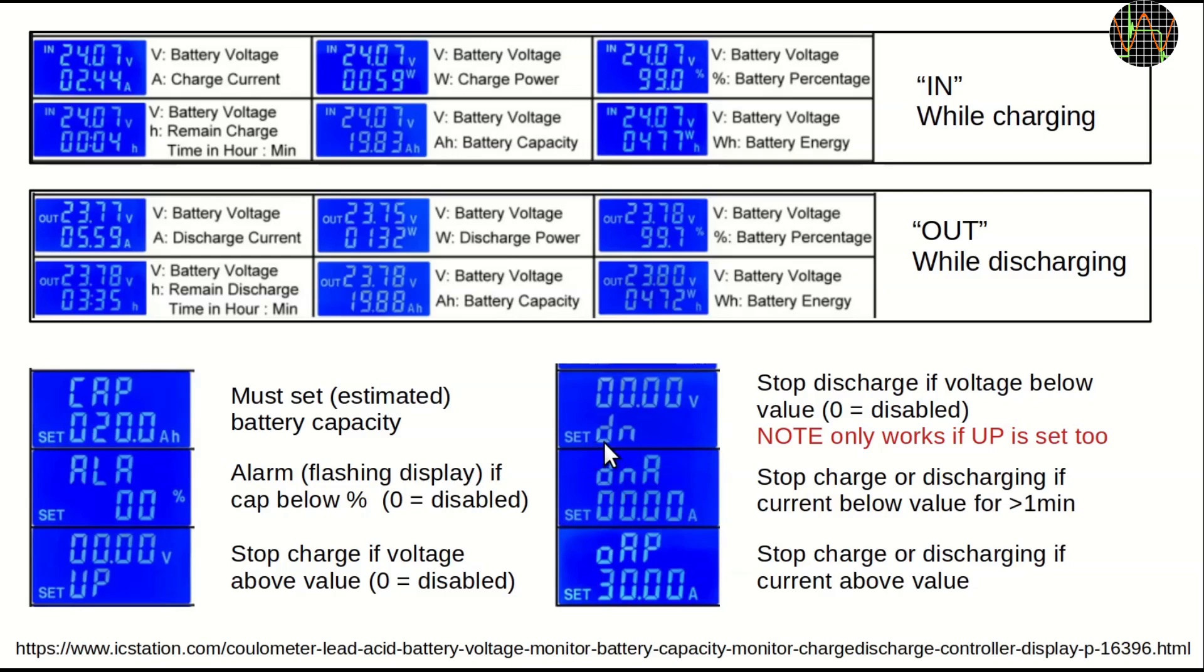DN is the opposite. The unit disengages the relay and thereby stops further discharge if the battery voltage drops below the stated value. I could not get this to work at all until I found by chance that it only works if UP is set to non-zero as well. It is a bug in the firmware, but it can be easily overcome by setting UP to some high value. DNA is a way to stop a charge or discharge if the current is below a threshold and OAP is basically an overload protection that turns the relay off if the stated value, by default a current of 30 amps, is exceeded.